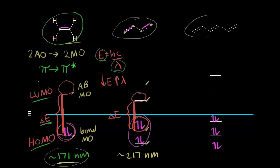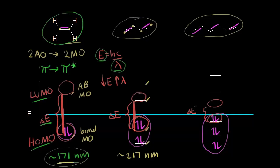Finally, let's look at 1,3,5-hexatriene. It has two, four, and six pi electrons total. Those six pi electrons fill the three bonding molecular orbitals. The energy difference between the HOMO and the LUMO has gotten even smaller, so the wavelength of light absorbed increases further, up to approximately 258 nanometers. Hexatriene absorbs light at approximately 258 nanometers, which is still in the UV region of the electromagnetic spectrum, so hexatriene doesn't have a color.